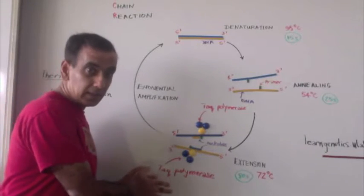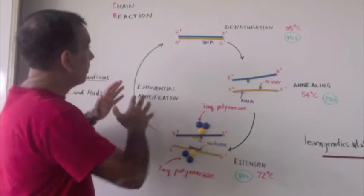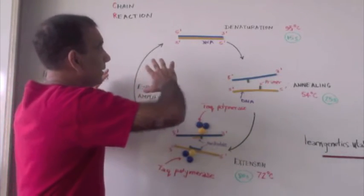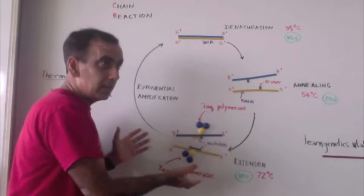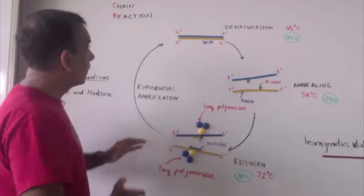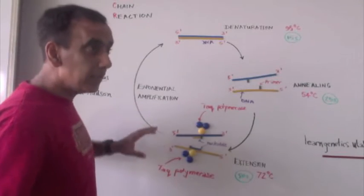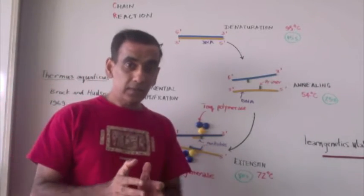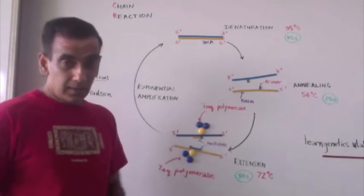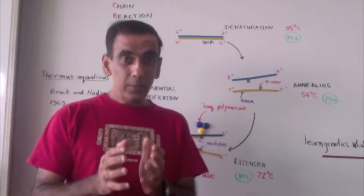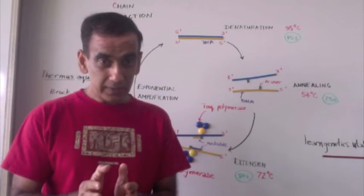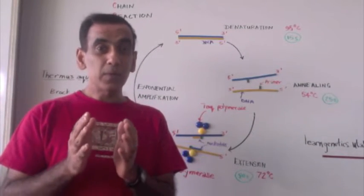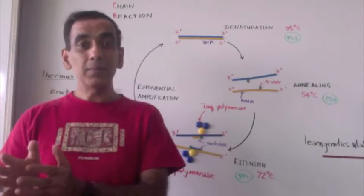...it was because of this enzyme that Mullis was able to design this protocol for the replication of DNA outside of a living system and at a temperature that would allow the replication process to proceed much more rapidly than it would in a biological system.